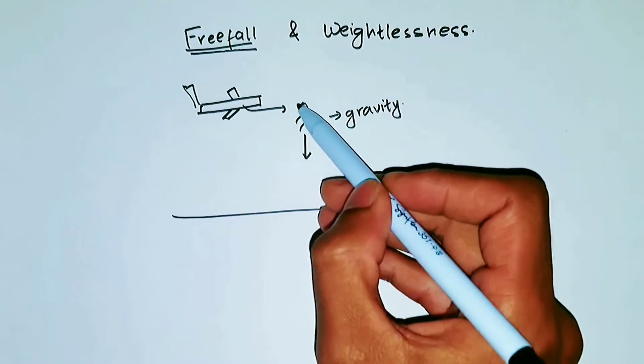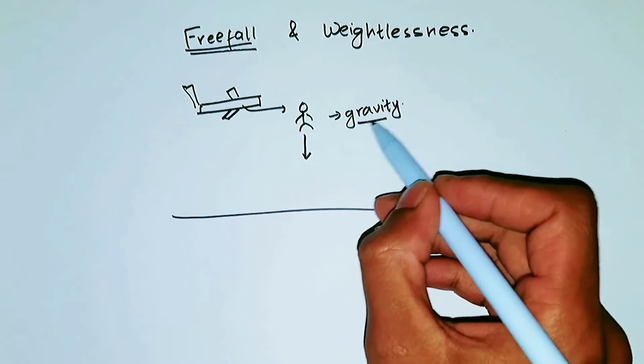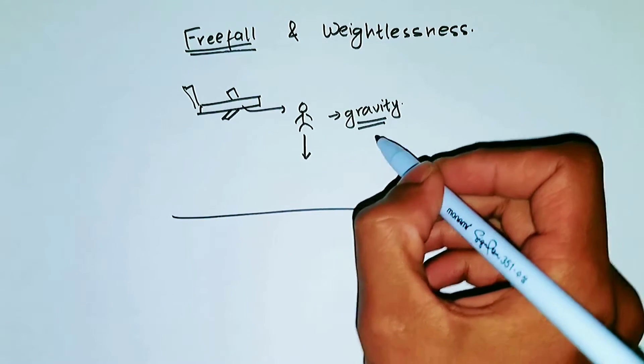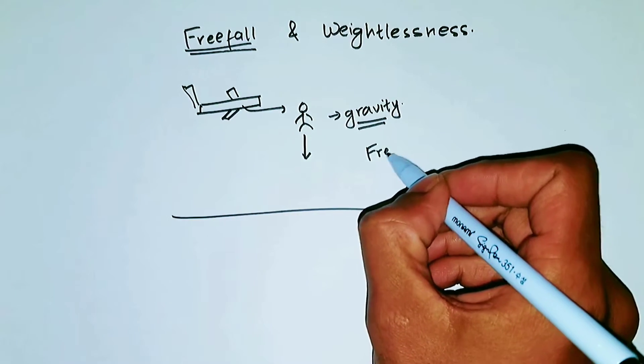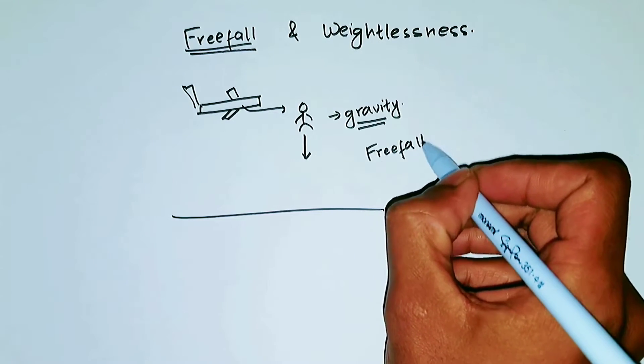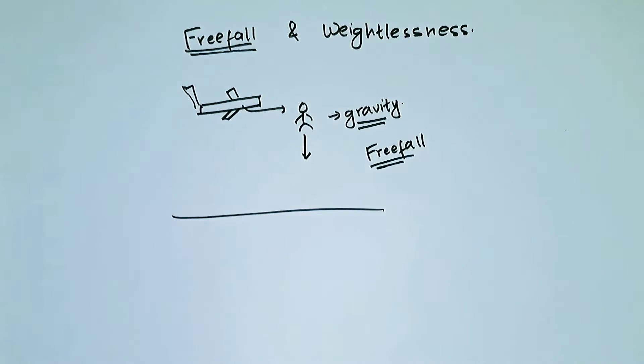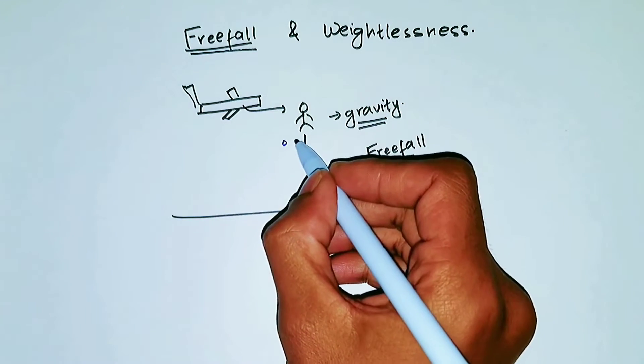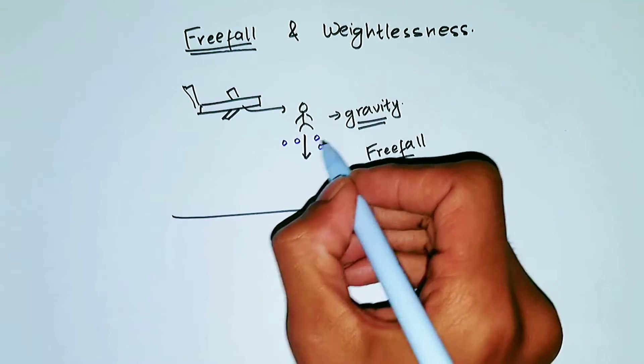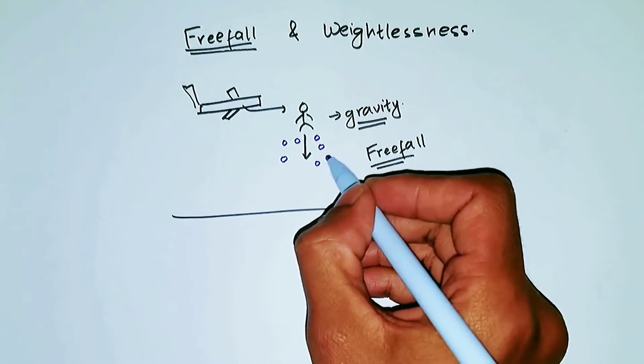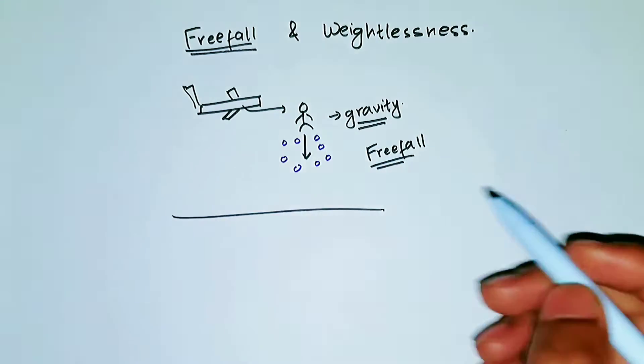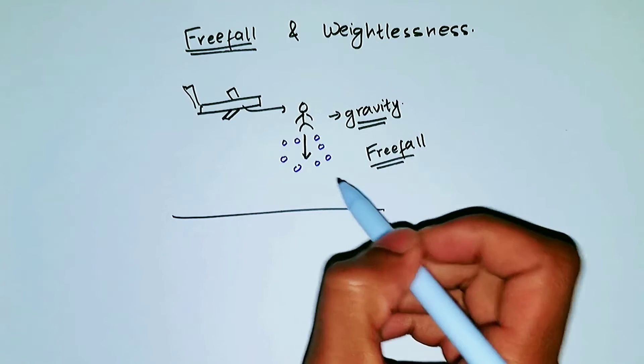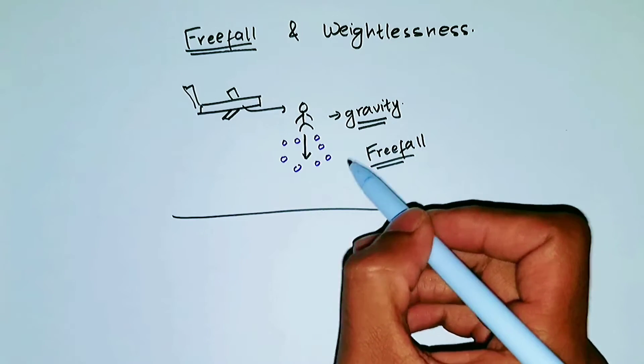Now, when a person is falling under the influence of gravity and gravity alone, then that kind of fall is called freefall. Now, is this person falling under the influence of gravity alone? No, because there are a little bit of air molecules in the space here. So, these air molecules is actually preventing the fall a little bit. And due to this reason, it's not actually complete freefall.